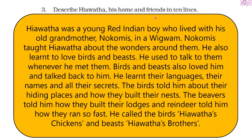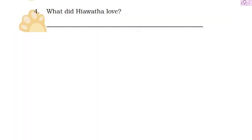He called the birds 'Hiawatha's chickens' and the beasts 'Hiawatha's brothers.' So these ten to eleven lines describe Hiawatha, his home, and his friends. You can add more lines to it and change the paragraph altogether. Please try to do this activity on your own and tell me which lines you added.